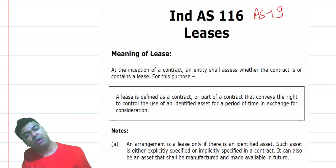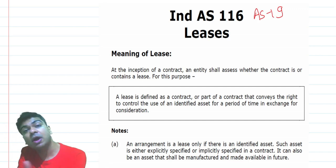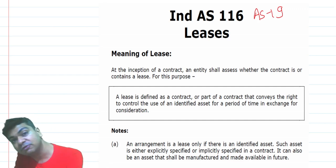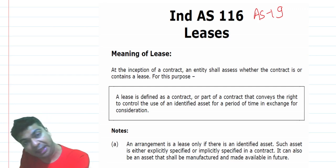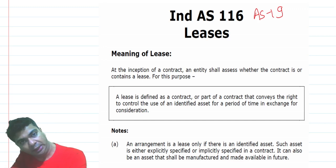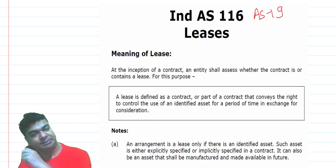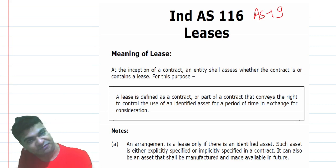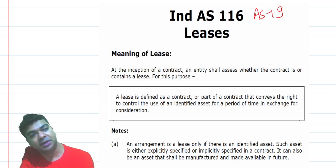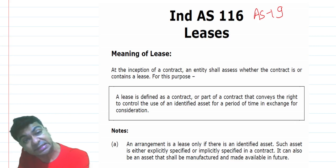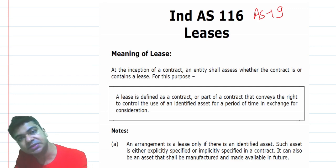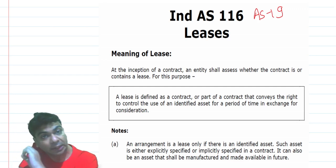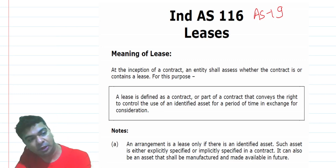When we think about AS 19 Leases, what comes to mind is that there are two types of leases — finance lease and operating lease. Now, no such distinction exists as far as a lessee is concerned under Ind AS 116. Finance lease and operating lease concepts still exist in the books of the lessor, but for the lessee, the accounting treatment has undergone a sea change after the introduction of Ind AS 116. Let's discuss its requirements.